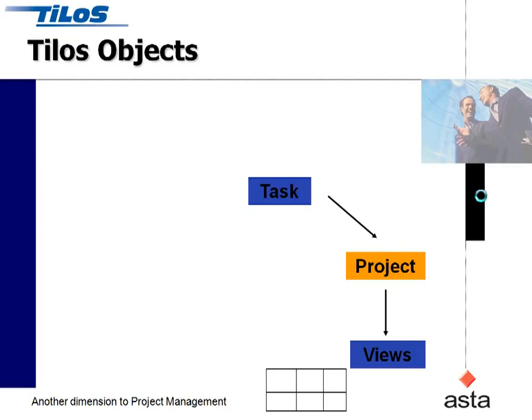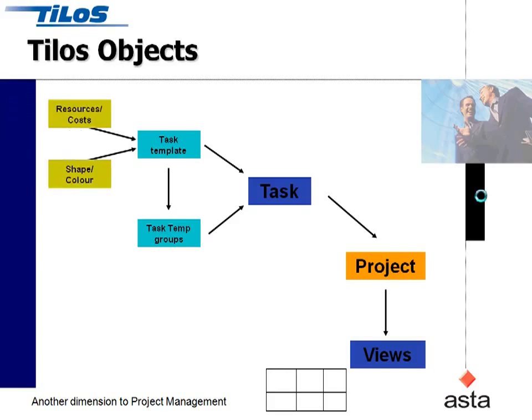A number of those tasks go to make up a project which can be seen in a view. When we create a task in Tylos, we base it on a task template that we've already created — a prototype task. Those tasks can be preloaded with a line style and color, as well as resources and a production rate. That information allows us to be very rapid in project creation in Tylos.